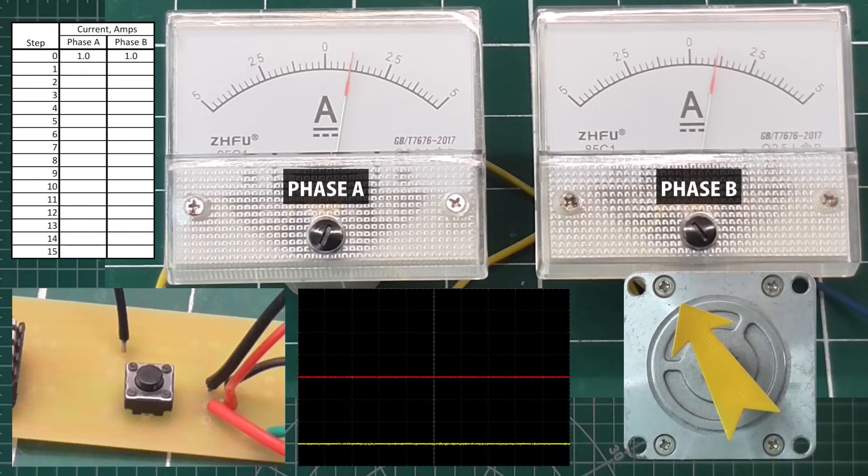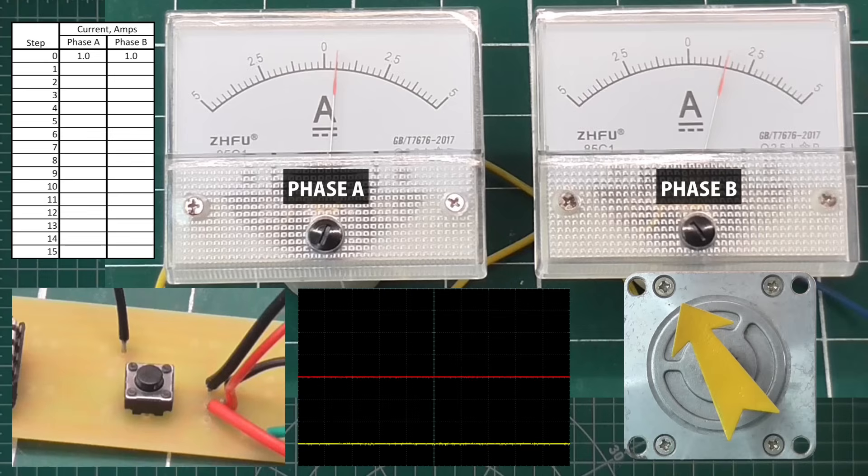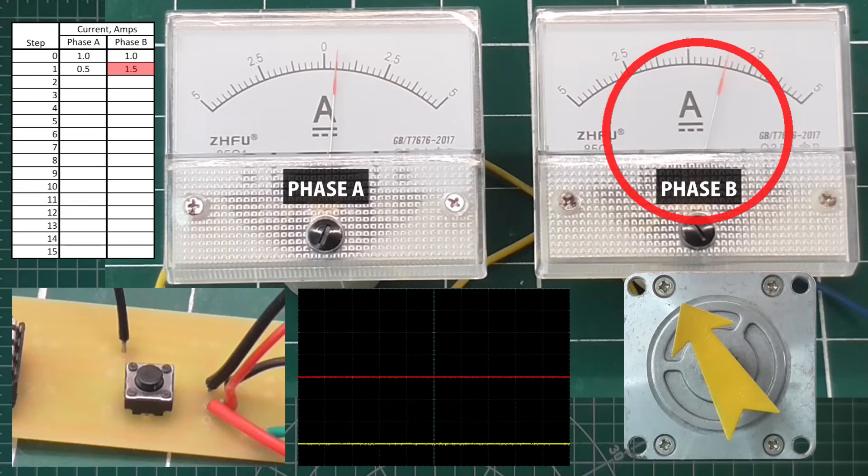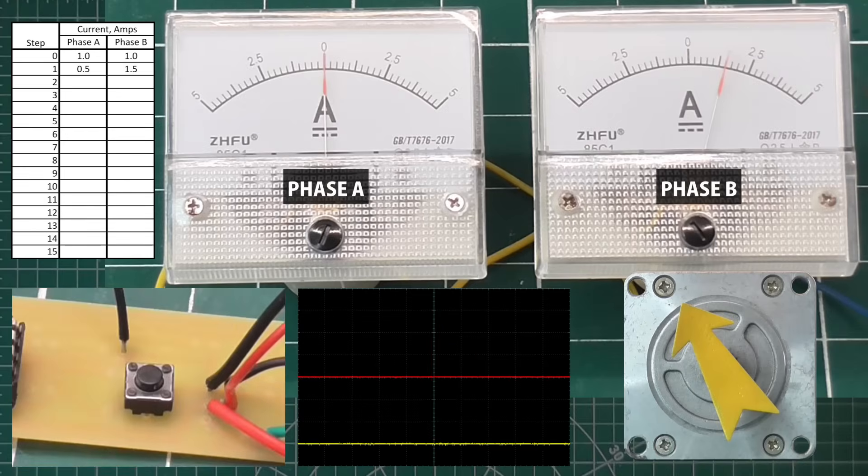Now if I make a single step, we can see the current in phase A has decreased to half an amp, whilst in phase B it has increased to 1.5 amps, still 2 amps total. Now if I make another step, the current in phase A has decreased to zero, whilst in phase B it's still 1.5 amps, making a total now of 1.5 amps.